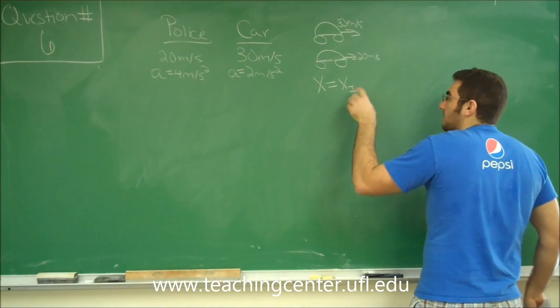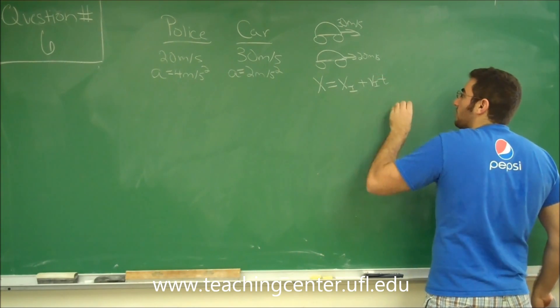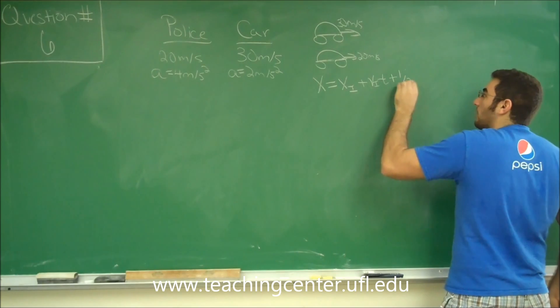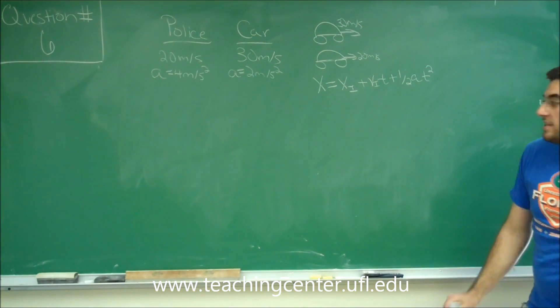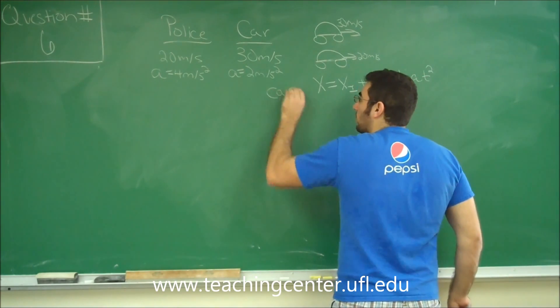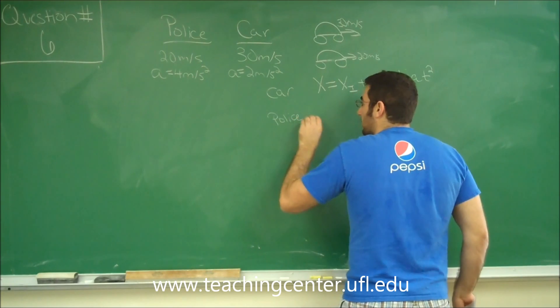It says distance equals initial distance plus v initial t plus one half acceleration times t squared. So we're going to have to do this twice. We're going to have to do this once for the car and once for the police officer.